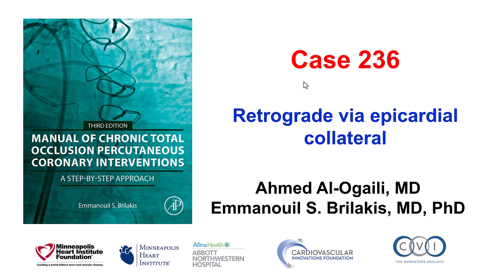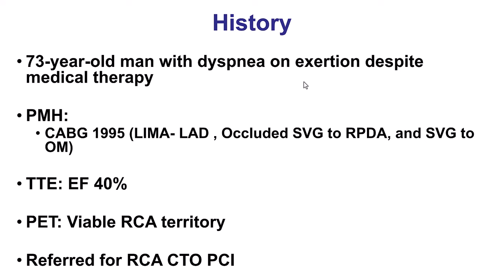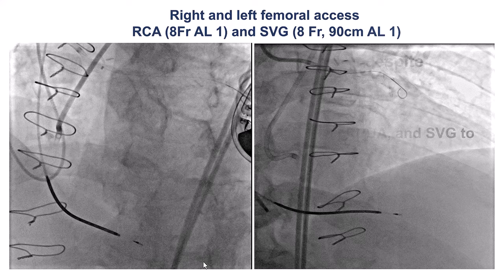The patient was an elderly gentleman with previous bypass and occluded vein graft to the PDA, a slightly reduced ejection fraction, and dyspnea on exertion, which was considered to be his anginal equivalent. He was referred for recanalizing the right coronary artery CTO.